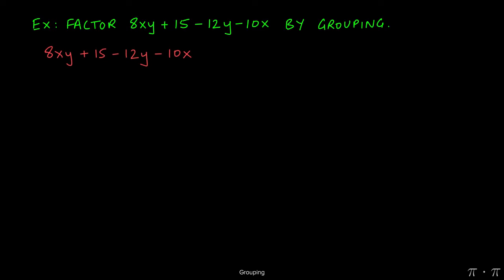We start by trying to find the GCF of the first two terms, which is just one. No number or variables are in common. So dividing both terms by one is just going to leave everything unchanged.